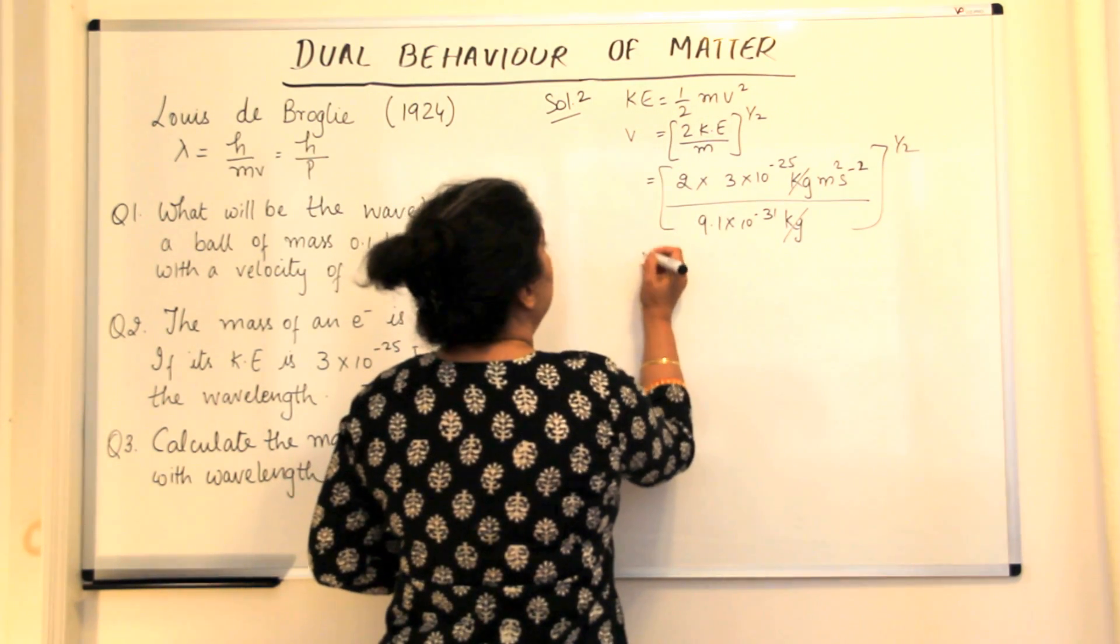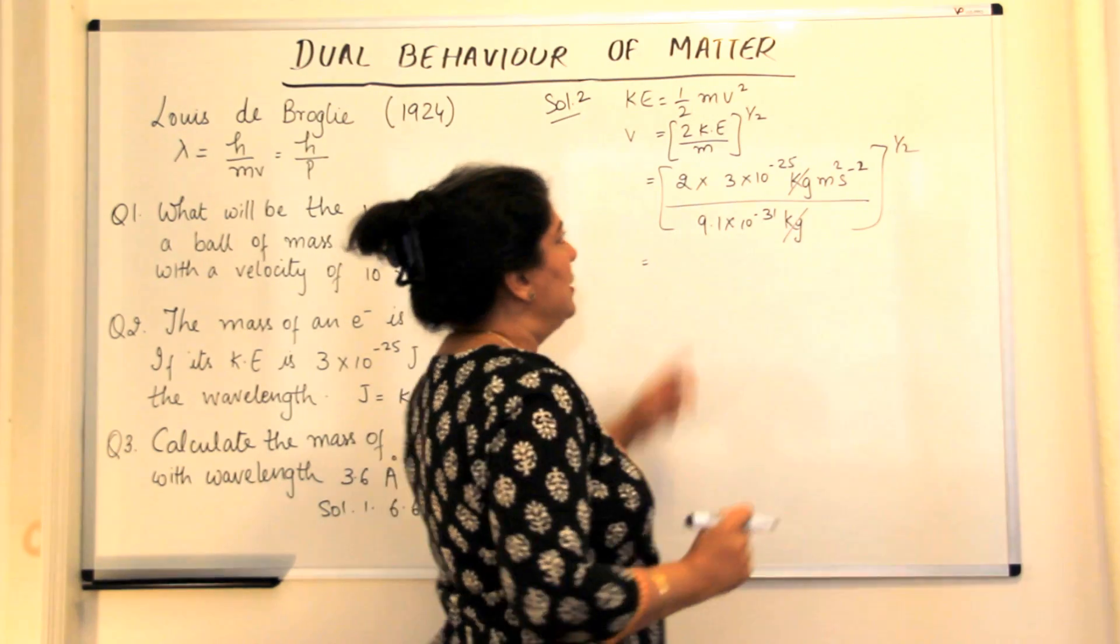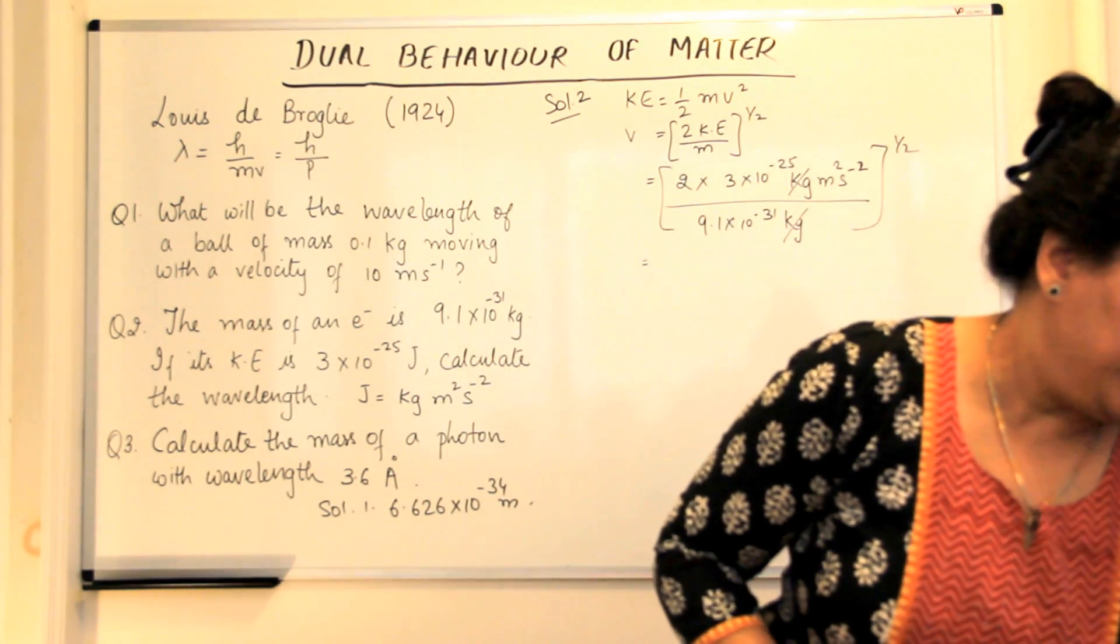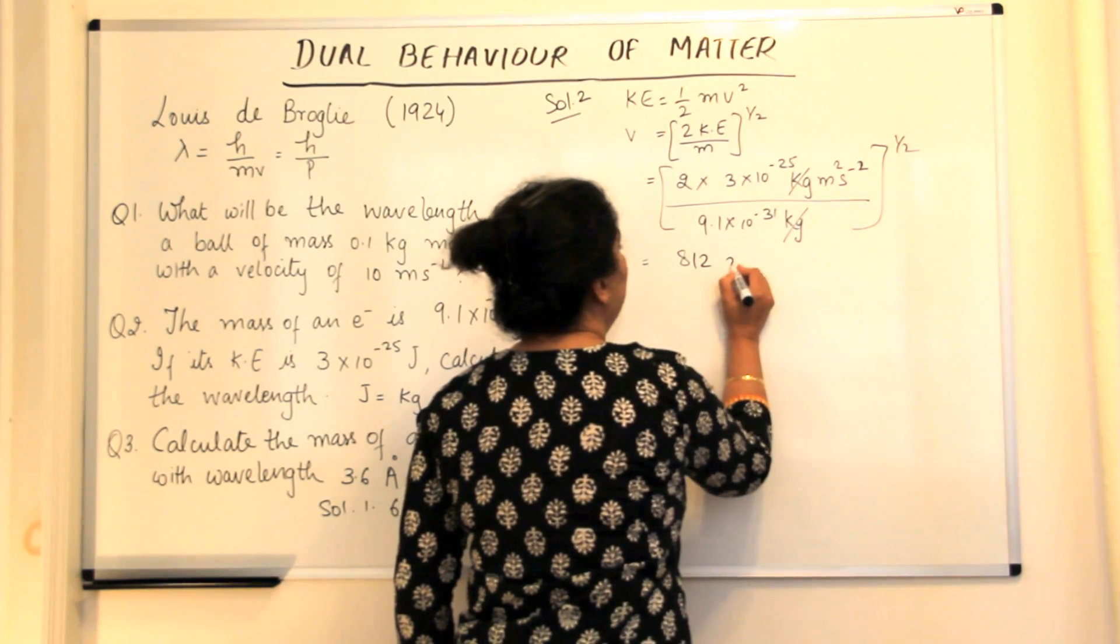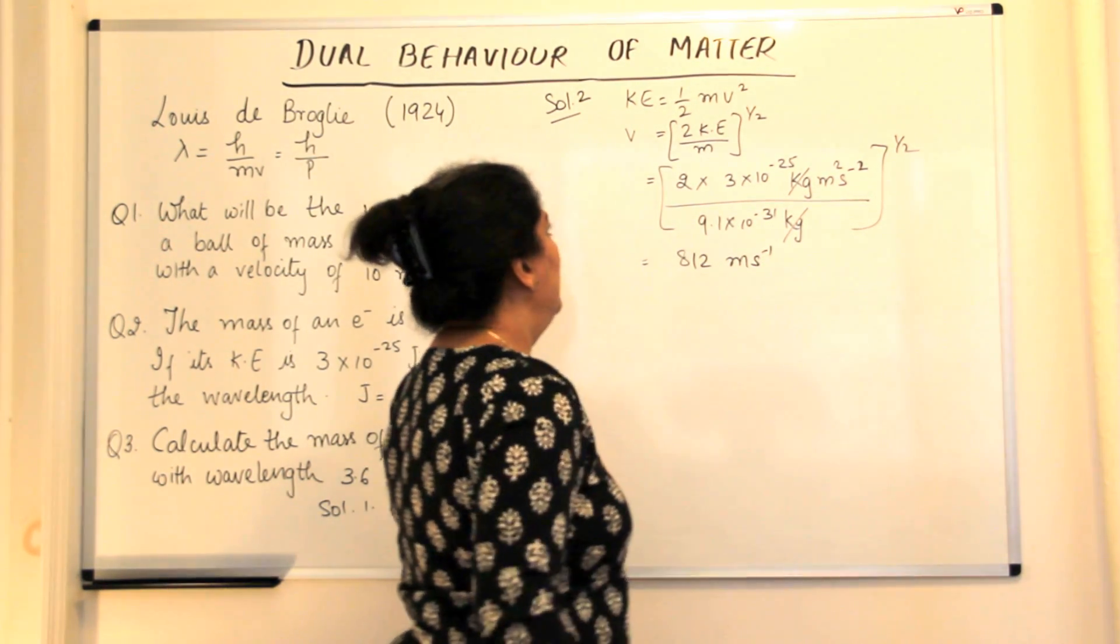So this proves that we have plugged in the right values and the right units too. So when you solve this, you will get the answer that is 812 meters per second.